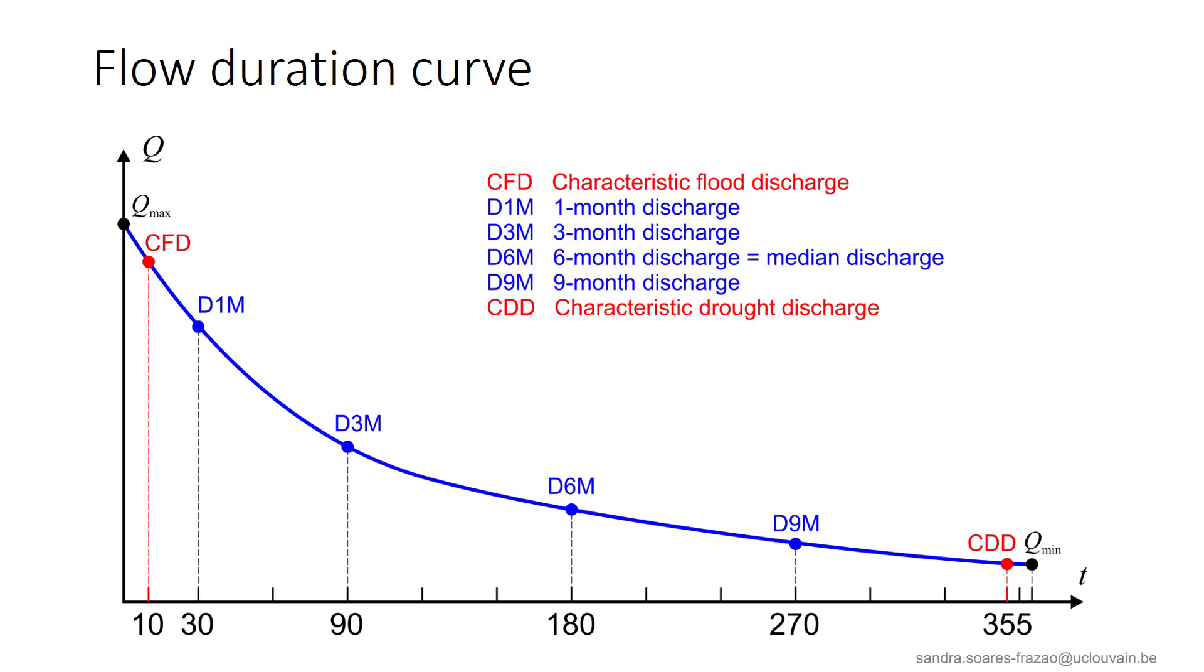If we assume that this ranking can be interpreted in a statistical way, then a point of the curve represents the discharge reached or exceeded for the corresponding time. Some usual characteristic discharges are given here. For example, the discharge at point D3m is reached or exceeded 90 days a year approximately, which is approximately 3 months a year.